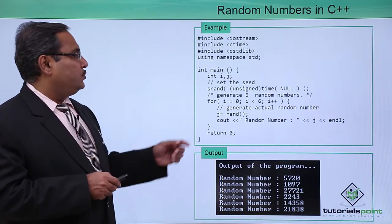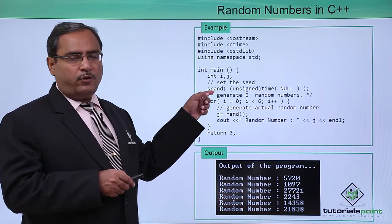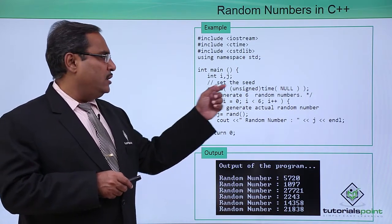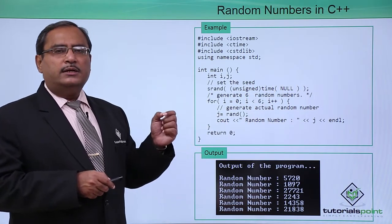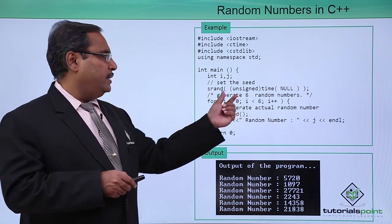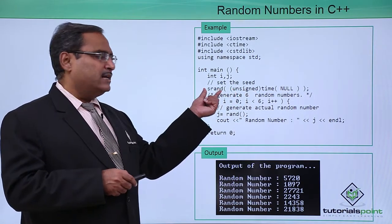Here is the code for us. Here we are having two variables i and j, and then at first we have called this srand function where time has been called, which will return the number of seconds in my system, and that has been converted to unsigned and that has been passed to the srand.